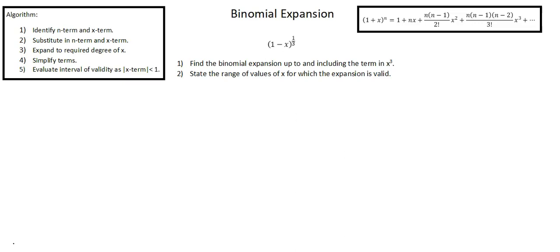Hi, this is Thomas. Welcome back. We're looking at the topic of binomial expansion. This is our first example. The binomial term is (1-x)^(1/3). The requirements are: 1) Find the binomial expansion up to and including the term in x^3, and 2) State the range of values of x for which the expansion is valid.